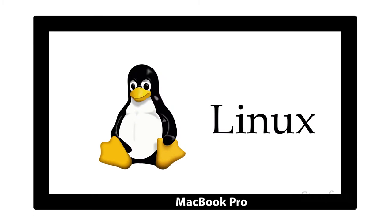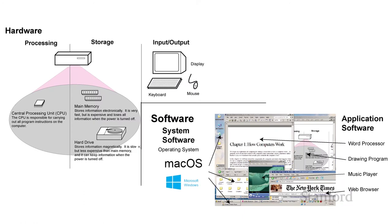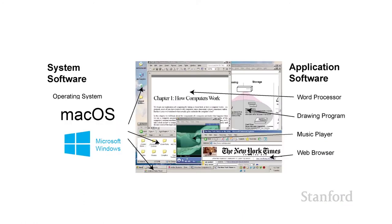Similarly, if I wanted to turn my laptop into a server, I could replace Mac OS with Linux. The system software is replaceable — it's a set of instructions that runs on top of the hardware. So we have a distinction between software and hardware, and also between application software and system software. We're going to take a close look at the operating system in another lecture.